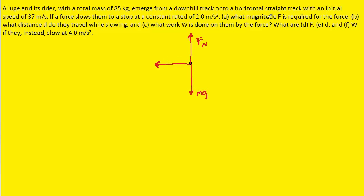The question notes that that force is capital F. The normal force and the gravitational force are equal in magnitude, so they essentially cancel each other out. That leaves the net force acting on the luge and rider to be just F. Once we know that's the net force, we can turn to Newton's second law, which tells us that the net force is equal to the mass of the object multiplied by its acceleration.